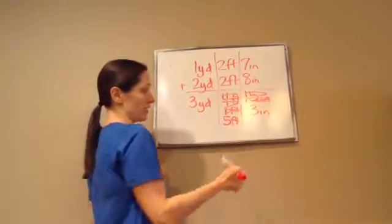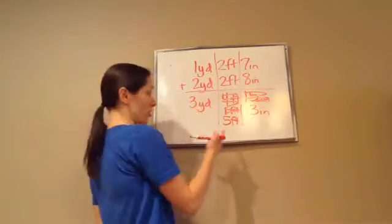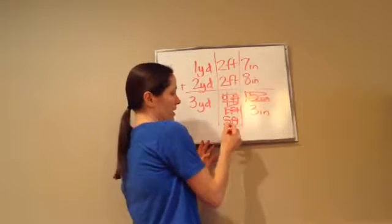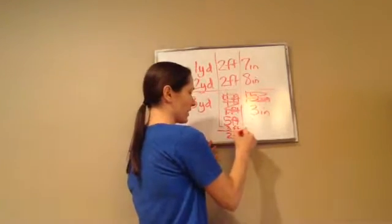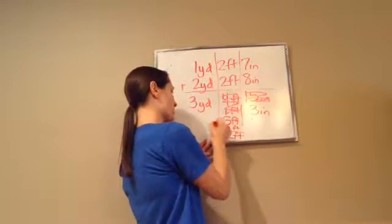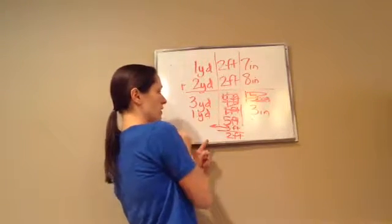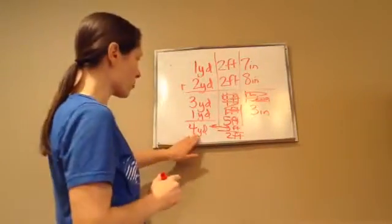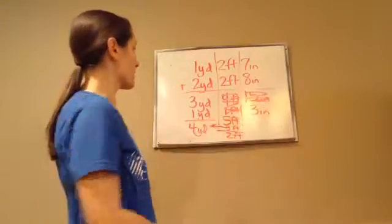And then 3 yards, 5 foot, 3 inches. Okay, but then you can ask yourself, how many feet are in 1 yard? 3 feet are in 1 yard. So how many can I take away here? 3. So if I take away 3 feet from here to bring it over there, then I have 2 feet left, right? So let's bring this 3 feet that I took away, which is 1 yard. And so our final is 4 yards, 2 feet, 3 inches. See how we did that?